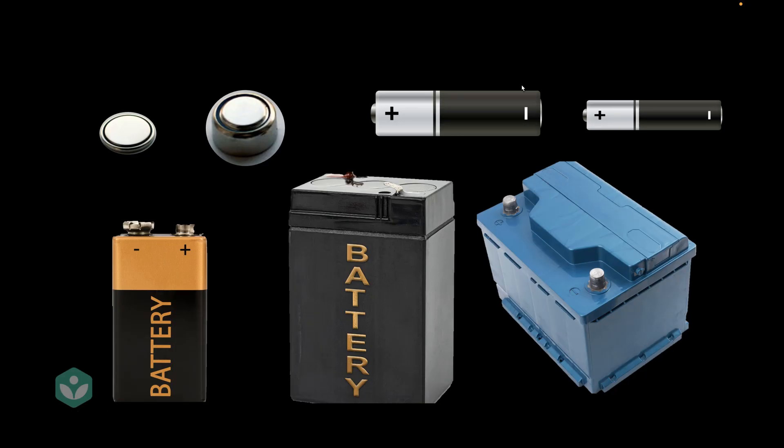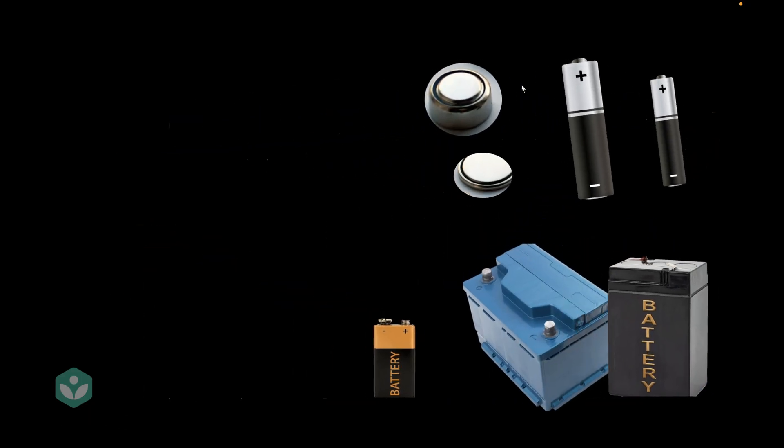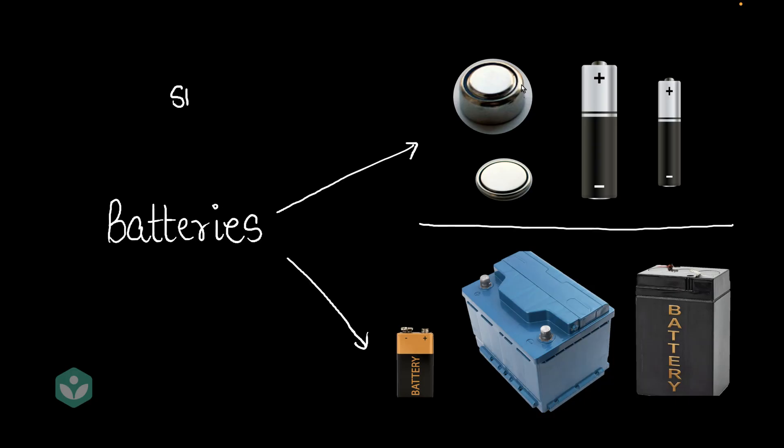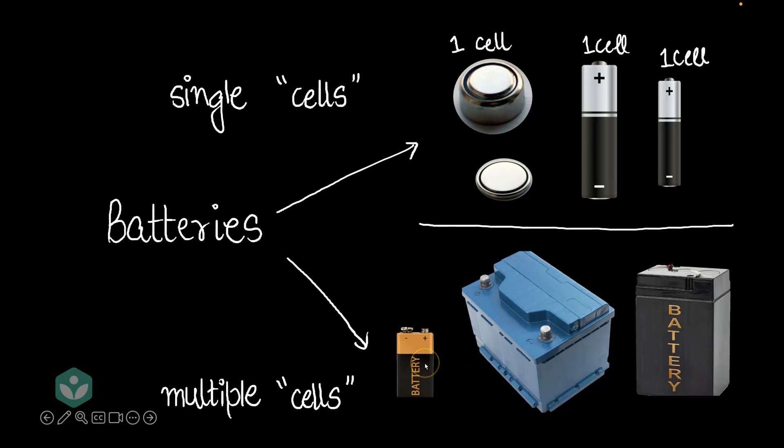Now, all of these batteries can be segregated into two types. And those two types are basically single cell batteries and multiple cell batteries. What exactly is a cell would be your question. Well, a cell is the smallest unit that converts chemical energy into electrical energy. Now, these batteries have just a single cell. So this has one cell. This has one cell. This one has one cell. Whereas these batteries have multiple cells.